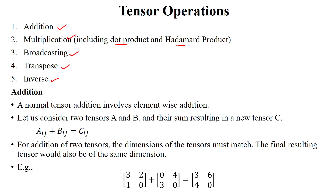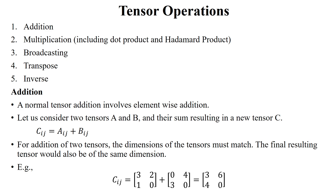When we are performing the arithmetic operation of addition between two tensors, we have to perform element-wise addition. Here, we will take tensor A and tensor B, and the result will be stored in tensor C. For addition of two tensors, the dimensions of the tensors should be matched.